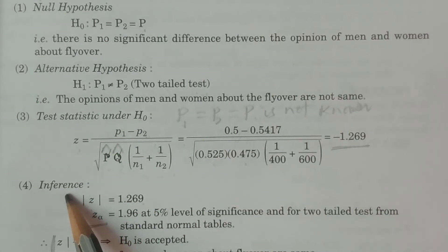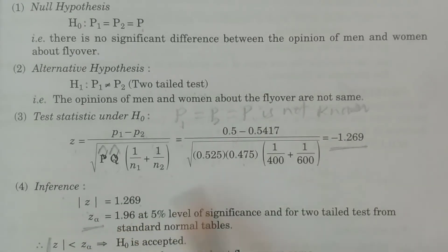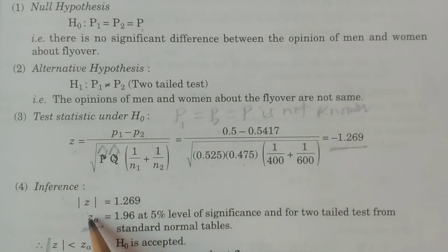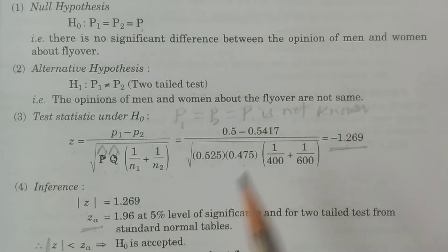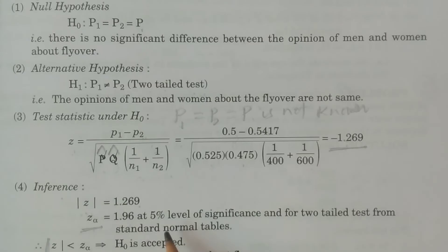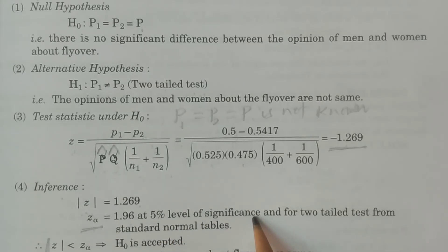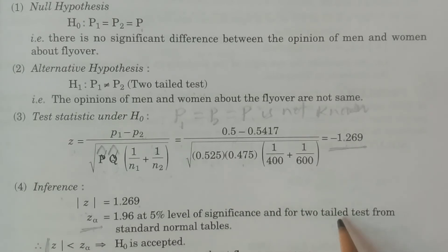For the Z alpha tabulated value, we need the level of significance from the problem, which is 5%. If not given, we generally use 5%. The problem gives 5% level of significance. For a two-tailed test, we refer to the alternative hypothesis. Since it's a two-tailed test at 5% level of significance, from standard normal tables, the value is 1.96. Z alpha equals 1.96.